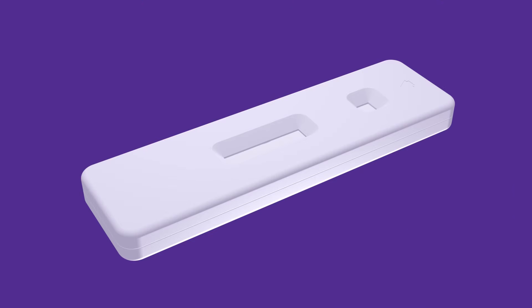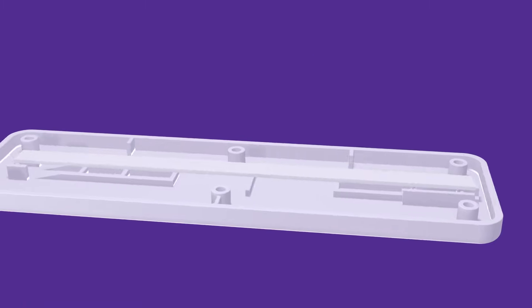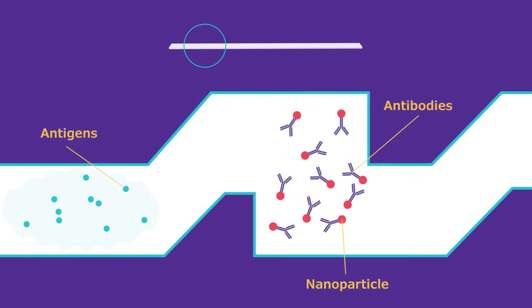Here's how a typical lateral flow test works. A sample, typically obtained by saliva, blood, or urine, is added to the sample pad. It then flows by capillary action down the strip. The sample first flows through the conjugate pad that is laden with antibody and nanoparticle constructs.